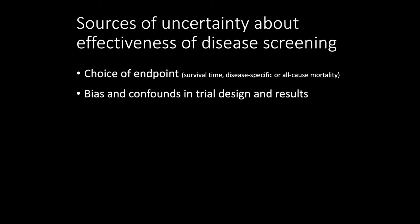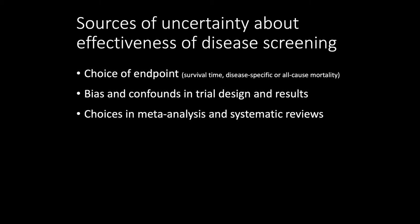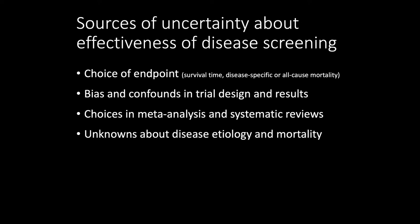There are biases and confounds of various kinds in trial design and in the results of those trials — covered in great detail in the readings. There are various ways in which the researchers, the statistical techniques, or even the patients can be biased by the trial design. There's also a variety of choices in meta-analysis and systematic reviews, meaning that even when aggregating a large number of trials on the same question, you can come to diverging judgments for or against the effectiveness of a screening for a particular group. There are also many unknowns about disease etiology and mortality — what causes the disease, how it progresses, and how many people in the general population actually die from it. In many cases we don't know much about the causes or biological progression of breast cancer, and estimates of who dies from those diseases carry some uncertainty based on how we measure and estimate it.